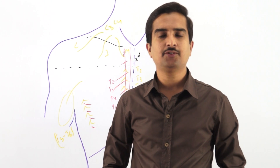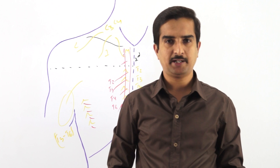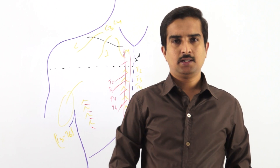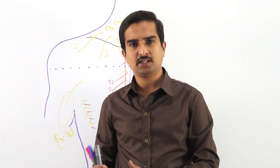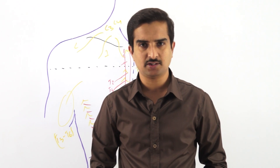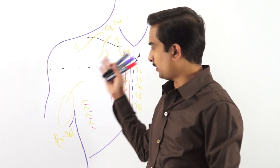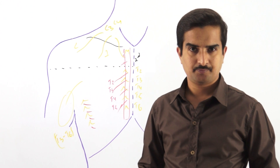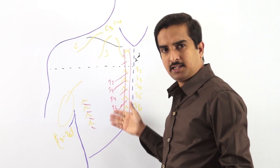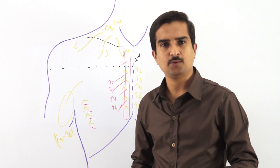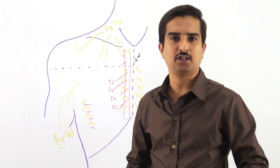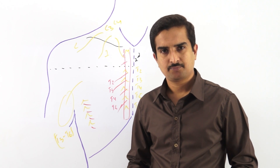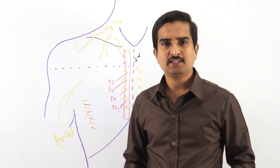After knowing the cutaneous nerves present at the pectoral region, we now discuss the cutaneous vessels. There are two groups of cutaneous vessels seen in the superficial fascia of the pectoral region. One group is related to the anterior cutaneous nerves, and another group is related to the lateral cutaneous nerves. The cutaneous vessels related to the anterior cutaneous nerves are derived from the internal thoracic artery, and are called perforating branches.